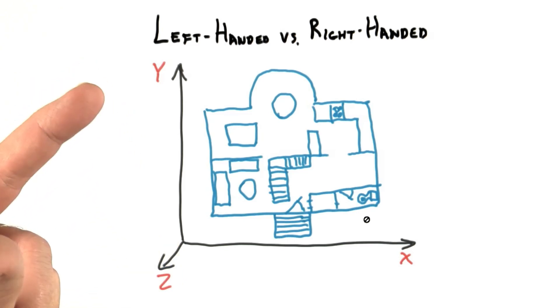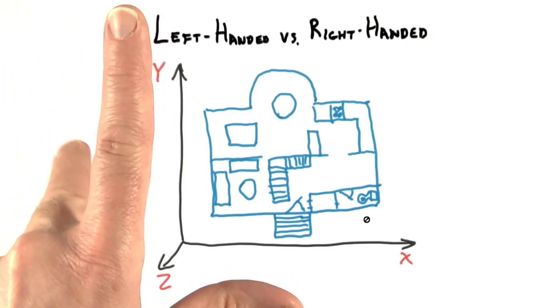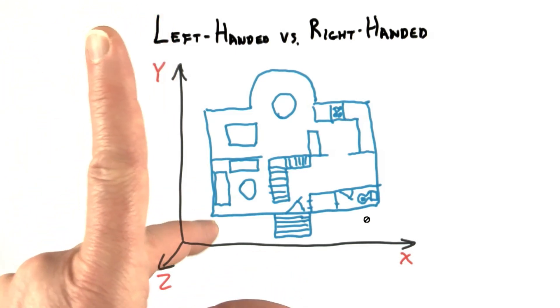For example, intelligent rabbits might agree that x is east and y is north. That's fine. However, they might decide that the z-axis points down into the page.